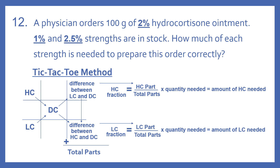Now we'll look at the tic-tac-toe method for this problem. We start with a tic-tac-toe grid and put our HC in the top left, our DC in the very center, and our LC in the bottom left. We take the difference diagonally: the difference between the LC and the DC is written in the top right, and the difference between the HC and the DC is written in the bottom right. We add that column to get the total parts. Then we take the HC fraction over total parts times quantity needed for the high concentration amount, and do the same for the LC fraction to get the low concentration amount.